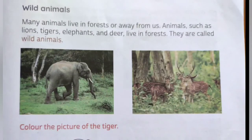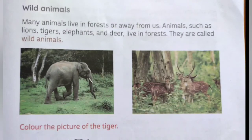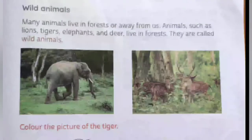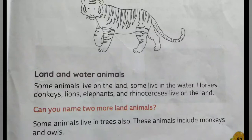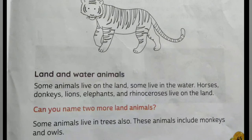Next topic is wild animals. Next is land and water animals. Some animals live on the land, some live in the water. Means, kuch janvar jamin pe or kuch paani mein rathay hain.